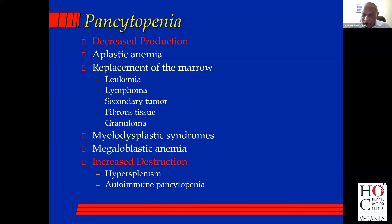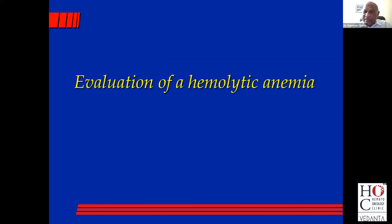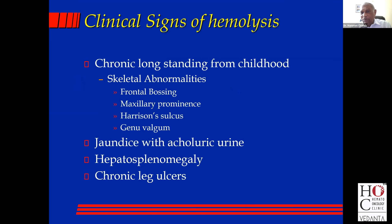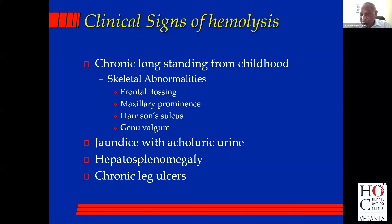A few words about evaluating a hemolytic anemia. When you suspect hemolysis, it can be congenital or acquired. In a congenital hemolytic anemia, the bone marrow has been expanding, so you get skeletal abnormalities — frontal bossing, maxillary prominence, Harrison's sulcus, genu valgum. You will have jaundice, and the jaundice is associated with colorless urine when passed. There can be hepatosplenomegaly and chronic leg ulcers. So if you see a six-year-old child with prominent bossing, jaundice, and an enlarged spleen, the diagnosis is a congenital hemolytic anemia.